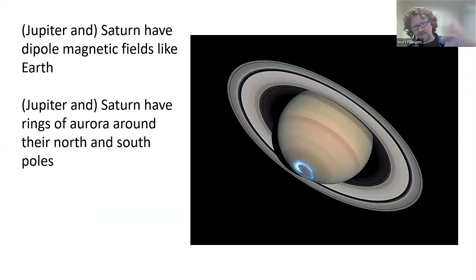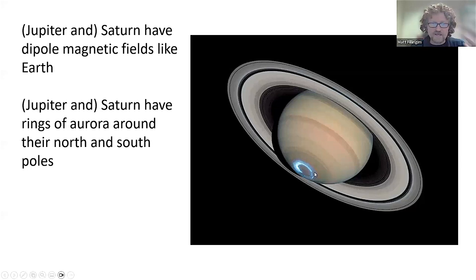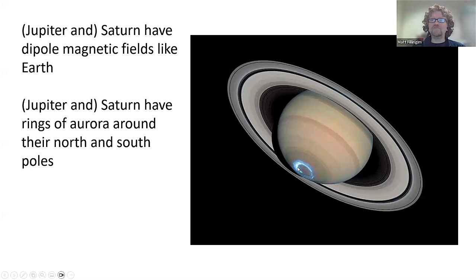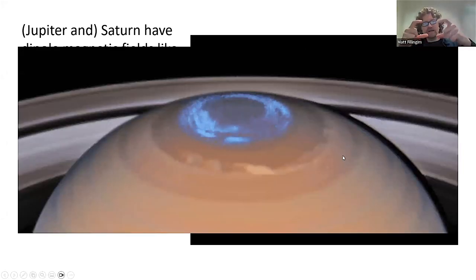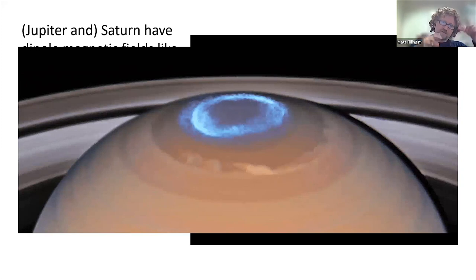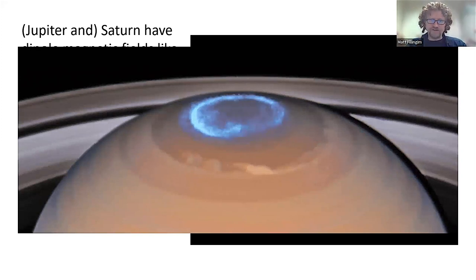Similarly, we can look at Saturn. It also has a dipole magnetic field like the Earth does. Here's Saturn in visible light, and then Saturn's aurora from the South Pole in ultraviolet light. In visible light, Saturn's cloud tops are too bright to see the aurora, but in ultraviolet, Saturn's clouds are dim, and we can see this bright emission from the ring around Saturn's pole. Here's a time-lapse from the Hubble Space Telescope, watching Saturn over the course of several hours, seeing how the aurora changes — it gets brighter and dimmer, similar to what we saw on Earth.